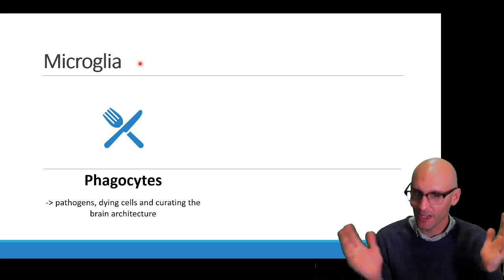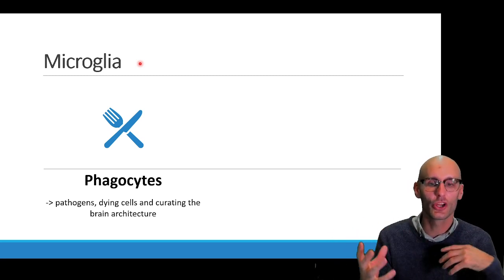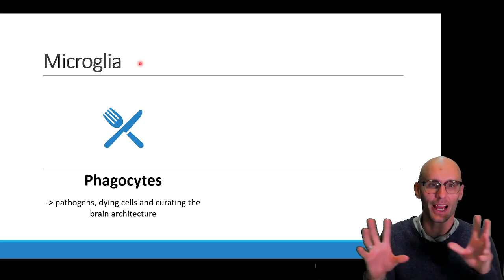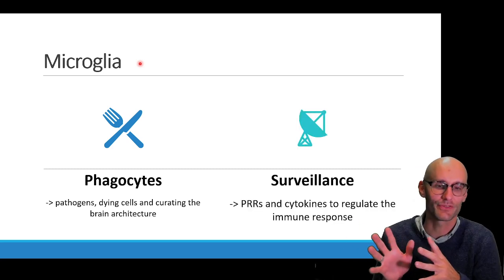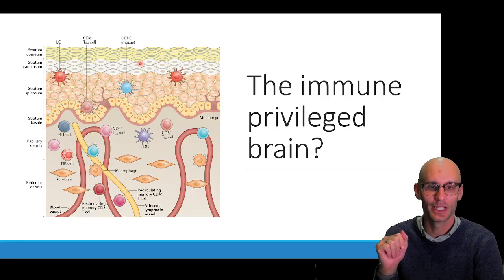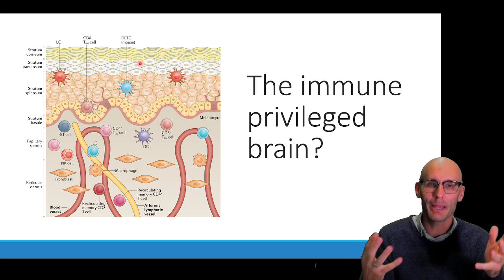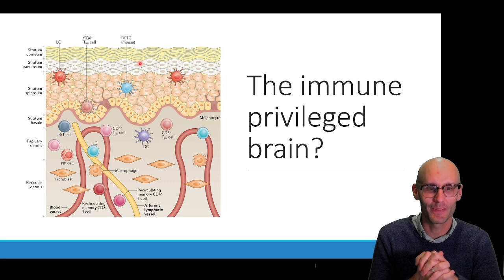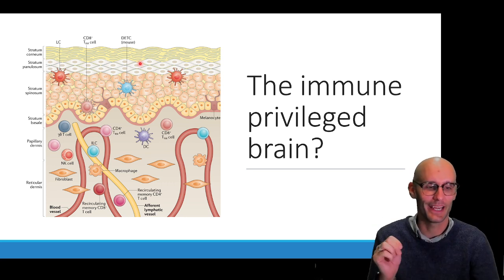So, microglia, the phagocytes, they eat pathogens, dying cells, and they also curate the brain architecture by eating synapses. And they also do surveillance with pattern recognition receptors, and release cytokines to regulate the immune response. Next up, we're going to cover, is the brain immune privileged? And what do we mean by it? You probably will hear this term, that the brain is immune privileged. So I'm going to jump into that a little bit more in the next video.